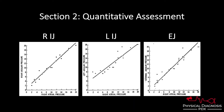This data comes from a 1973 study where they directly measured right atrial pressure and plotted it on the x-axis. At the same time, they measured pressure within the right IJ, the left IJ, and the EJ, and plotted those on the y-axis. This data demonstrates that the right IJ is highly reliable for estimating right atrial pressure — quite a linear relationship. It also demonstrates that the left IJ and the EJ are nearly as reliable as the right IJ. So you should feel comfortable using any of these vessels to calculate JVP.